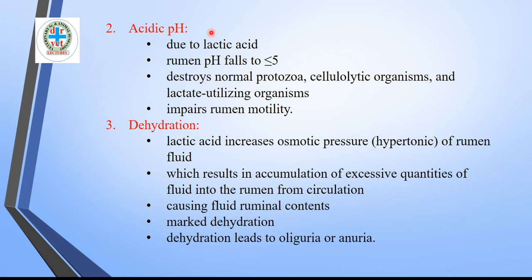Second pathogenesis — acidic pH: due to overproduction of lactic acid, the rumen pH falls below 5. This acidic pH destroys the normal protozoa of the rumen, destroys cellulose-digesting organisms, destroys lactate-utilizing organisms, and impairs rumen motility, leading to hypomotility or atony.